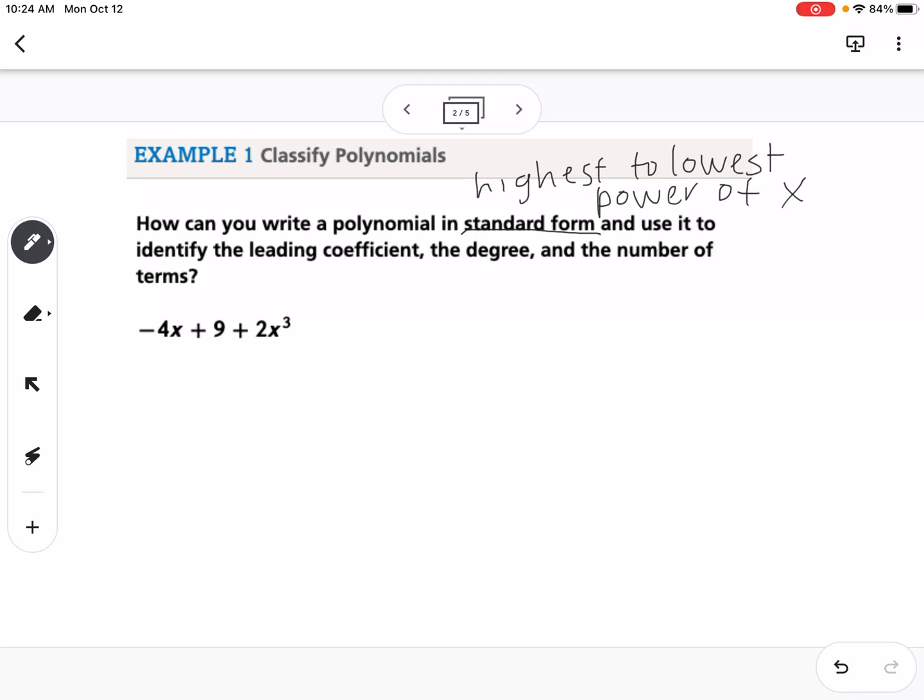So if I were to rearrange this, I would get 2x cubed, that's my highest power of x, minus 4x plus 9. So this polynomial is in standard form because it's decreasing powers of x.